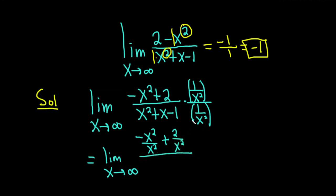All of this is being divided by x squared times 1 over x squared which gives us x squared over x squared. Plus x times 1 over x squared will give us x over x squared. And then minus 1 times 1 over x squared is minus 1 over x squared.